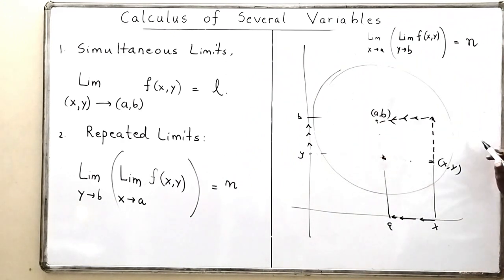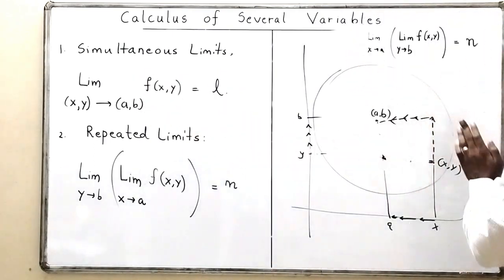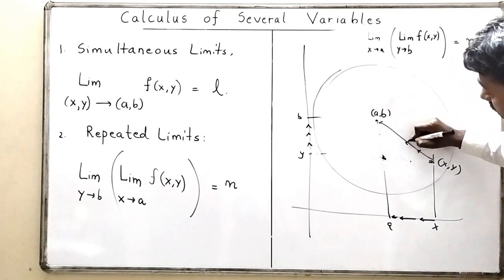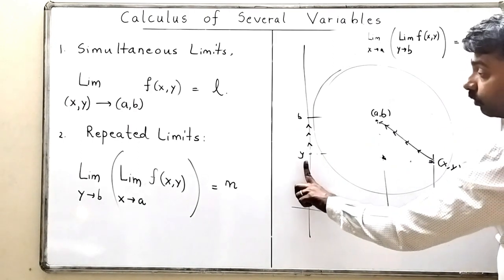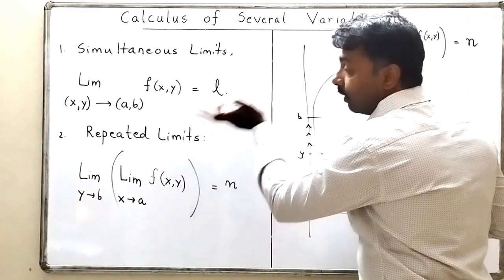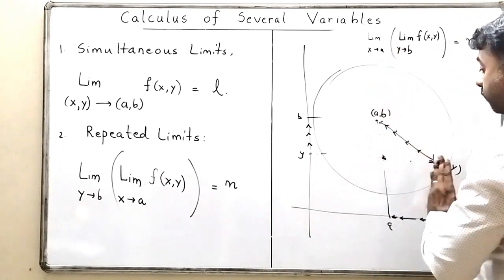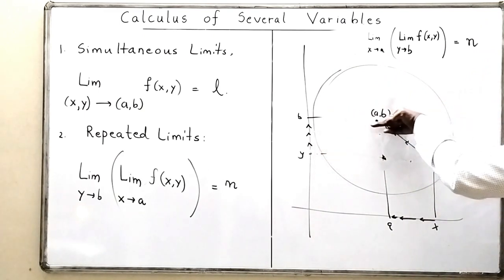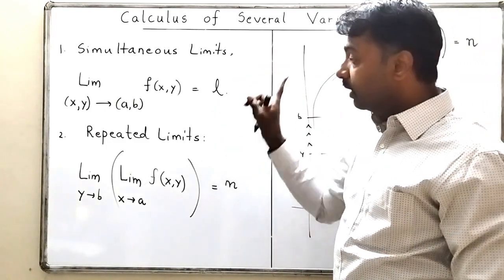I hope the concept of repeated limits and simultaneous limits are both clear. In simultaneous limits, x and y both move together — both x and y change at the same time toward (a, b). In repeated limits, you first move parallel to the x-axis while y is fixed, then change y, or vice versa. In the next lecture we will solve problems on simultaneous limits and repeated limits.